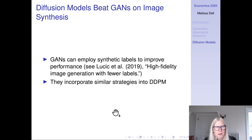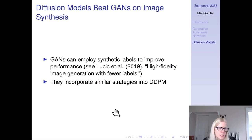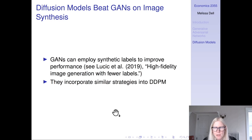Then the same authors, a couple of months later, had a paper called Diffusion Models Beat GANs on Image Synthesis. GANs can employ synthetic labels to improve performance, and when the DDPM paper incorporates a similar strategy, they find that they actually do better than GANs.